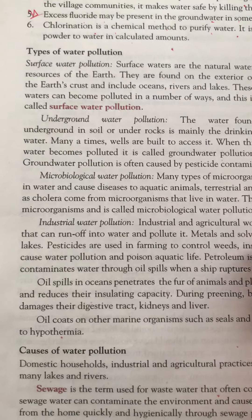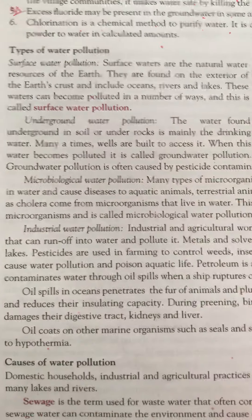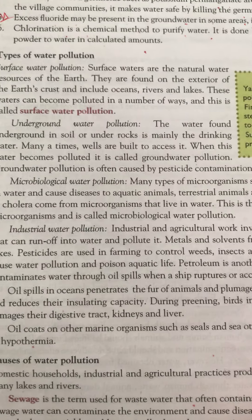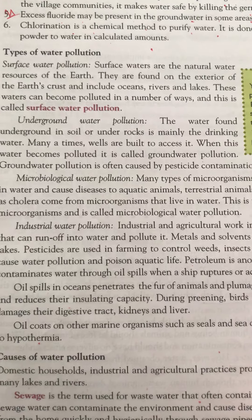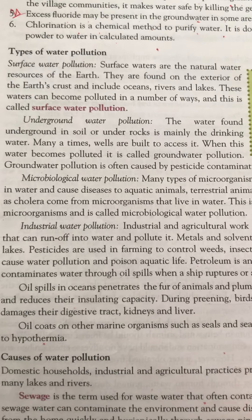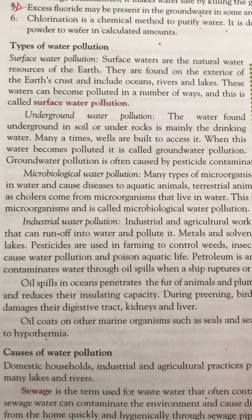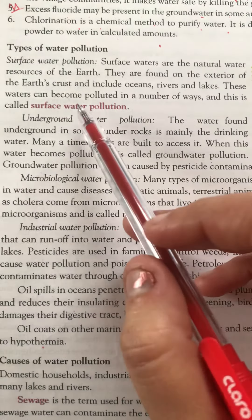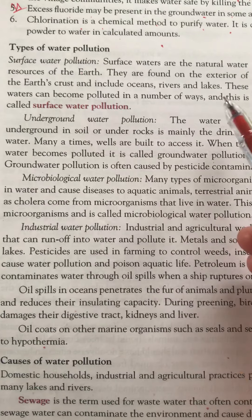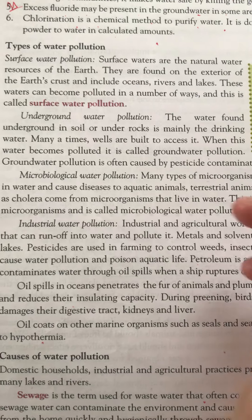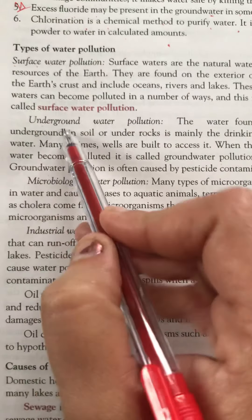Now, the types of water pollution. The first type is surface water pollution. As is clear from the name, it involves the natural surface water resources of earth, which can be polluted in a number of ways. This is known as surface water pollution.